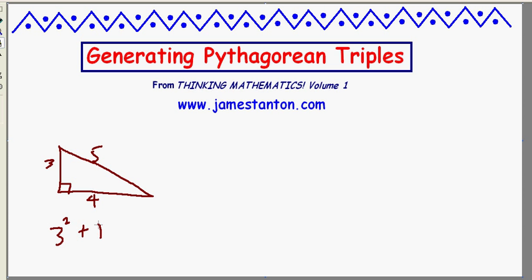And by Pythagoras, we have that 3 squared plus 4 squared is 5 squared as a relationship that's true for right triangles. And if you check, 9 plus 16 is indeed 25.